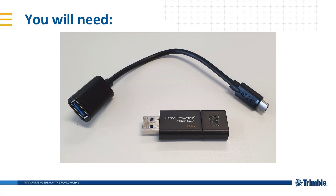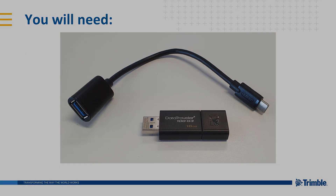You're going to need a couple of things for this workflow. Firstly, you'll need the File Flipper app installed on your device. This can be found on the Google Play Store and is free to download. You will also need a USB stick that's compatible with your Trimble machine control system, and a USB on-the-go connector to connect the USB stick with your device.